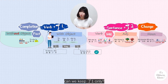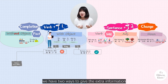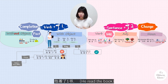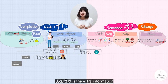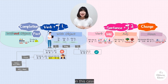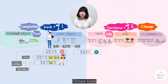Can we keep 了1 only? Like 他看了书? No. But we can correct it by delivering some extra information. We have two ways. One is adding a clause: 他看了书，现在很累 — 现在很累 is the extra information. Another way is adding information to modify the object 书, for example 他看了汉语书 — 汉语 modifies the object 书.